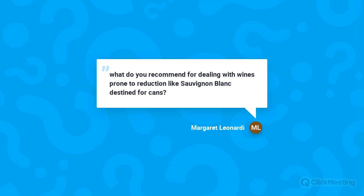For Sauvignon Blanc destined for cans: try to follow the preventive guidelines discussed today. If the wine has been treated with copper sulfate, consider treating with Clarol HM to remove copper-bound sulfides before canning. We're also planning a webinar on canning this year, so stay tuned for more detailed information on that topic. The key point is: if copper was used to treat reduction, remove copper-bound sulfides with a PVI/PVP-containing product before the wine goes into a can.